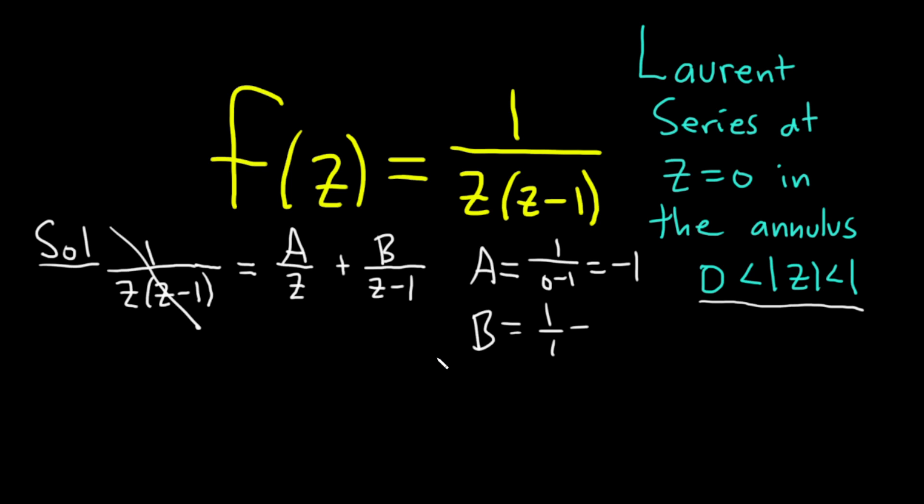Another way to do it would be to multiply both sides by z, z minus 1, and then plug in numbers and find A and B. All right, so we have A and B.